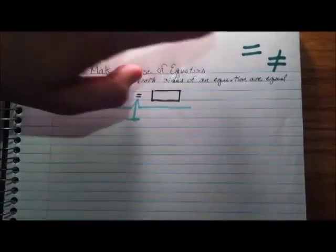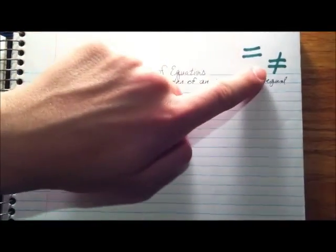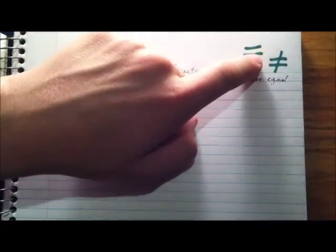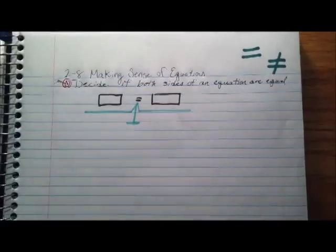So here are the two major symbols that you're going to see. You're going to see the equal sign, and then of course you're going to see the not equal sign. It's just an equal sign with a slash through it. There's nothing fancy about it.